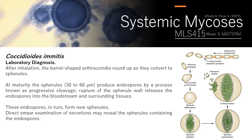After inhalation, the barrel-shaped arthroconidia enlarge as they convert to spherules. The spherules contain endospores. The process by which arthroconidia are converted to spherules is called progressive cleavage — involving spiral septation, then segmentation, and then endospore release. Rupture of the spherule wall releases endospores into the bloodstream and surrounding tissues, which is how it becomes systemic.